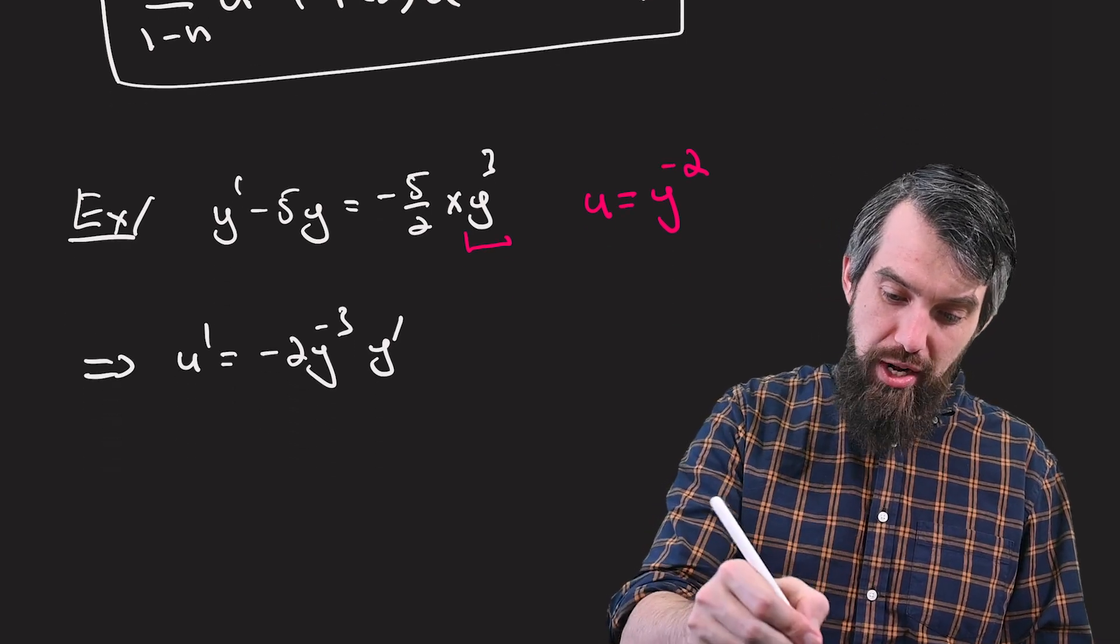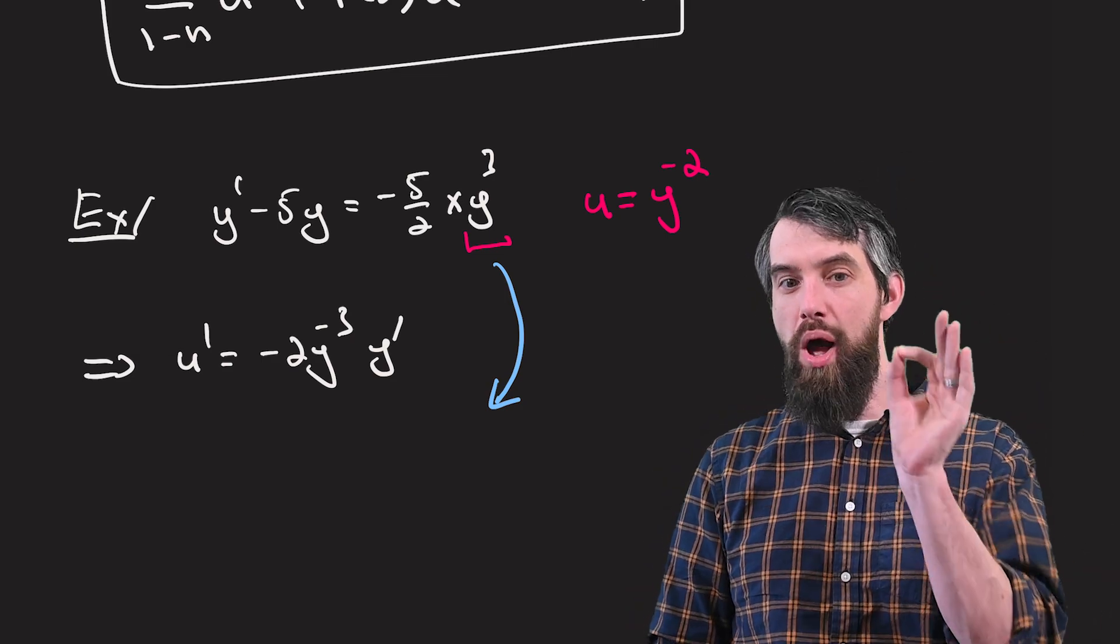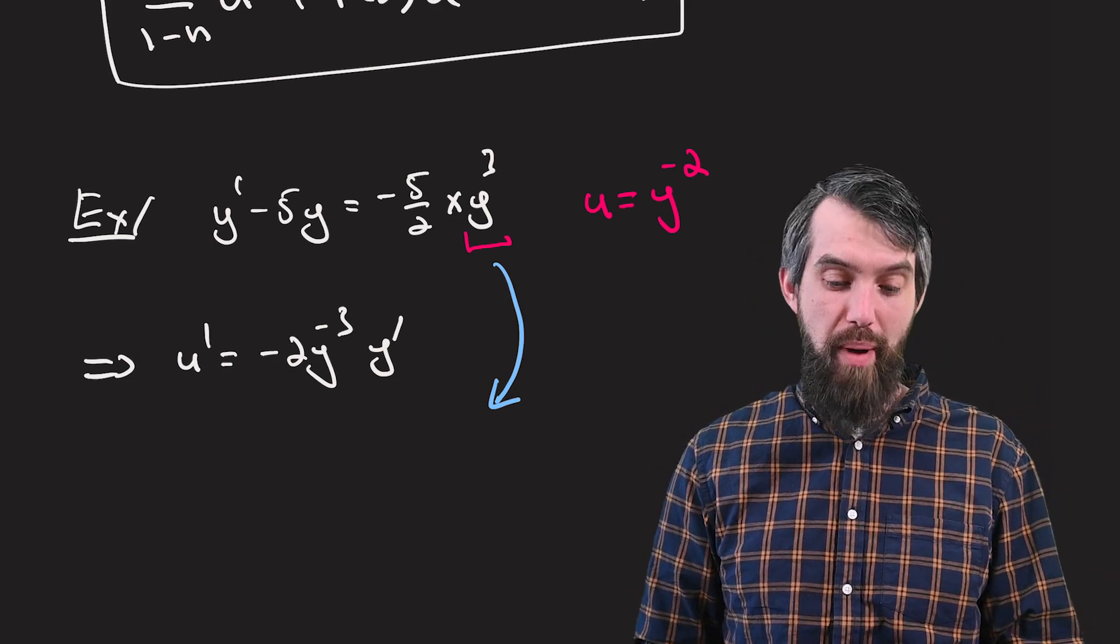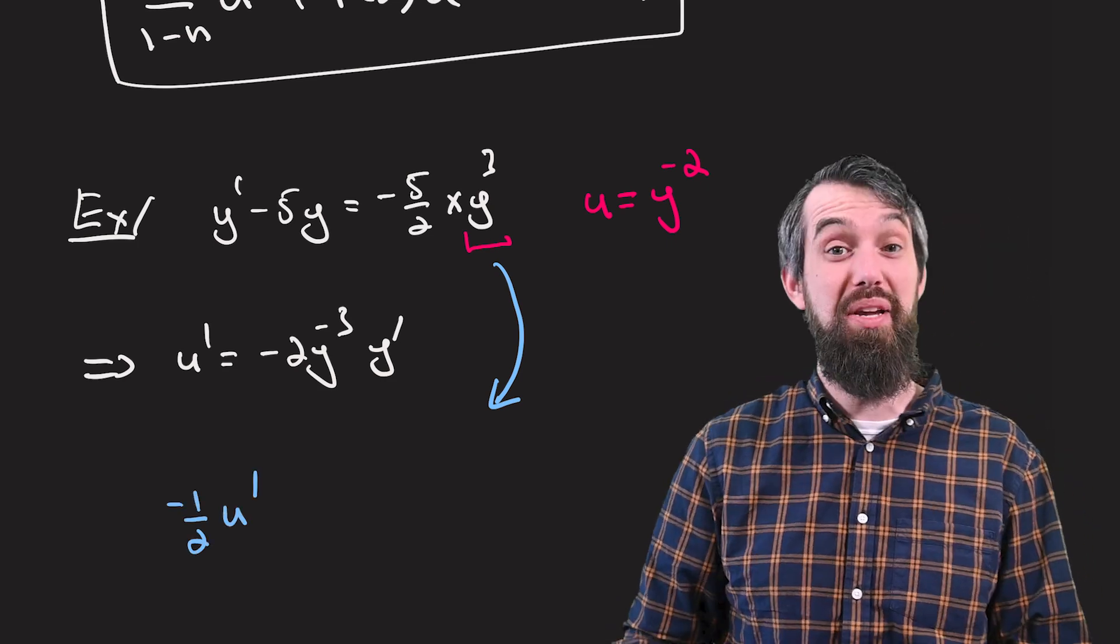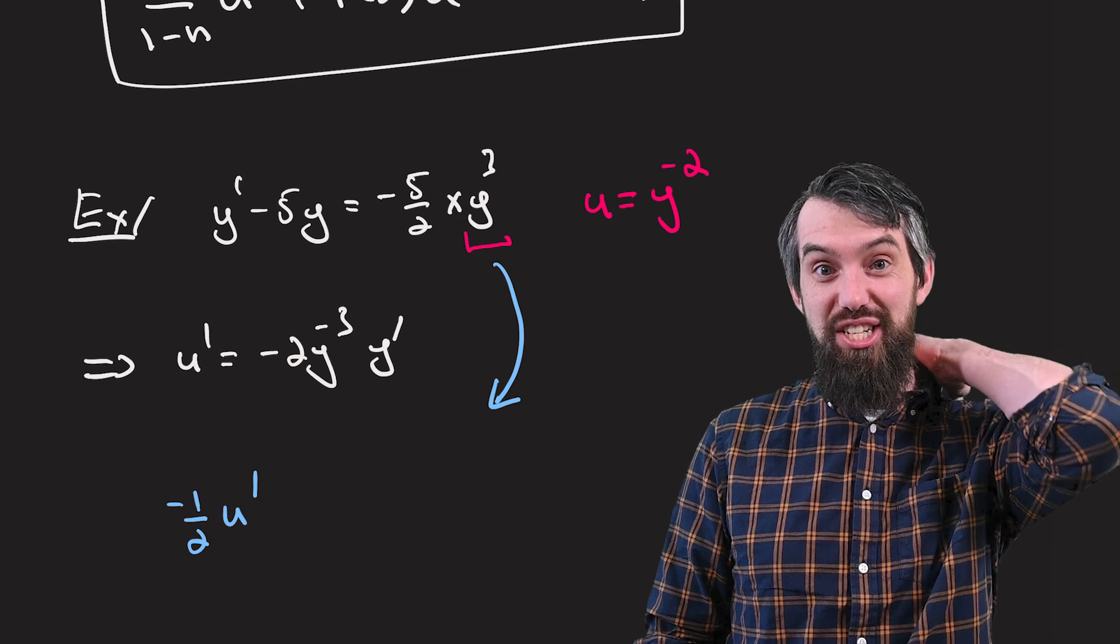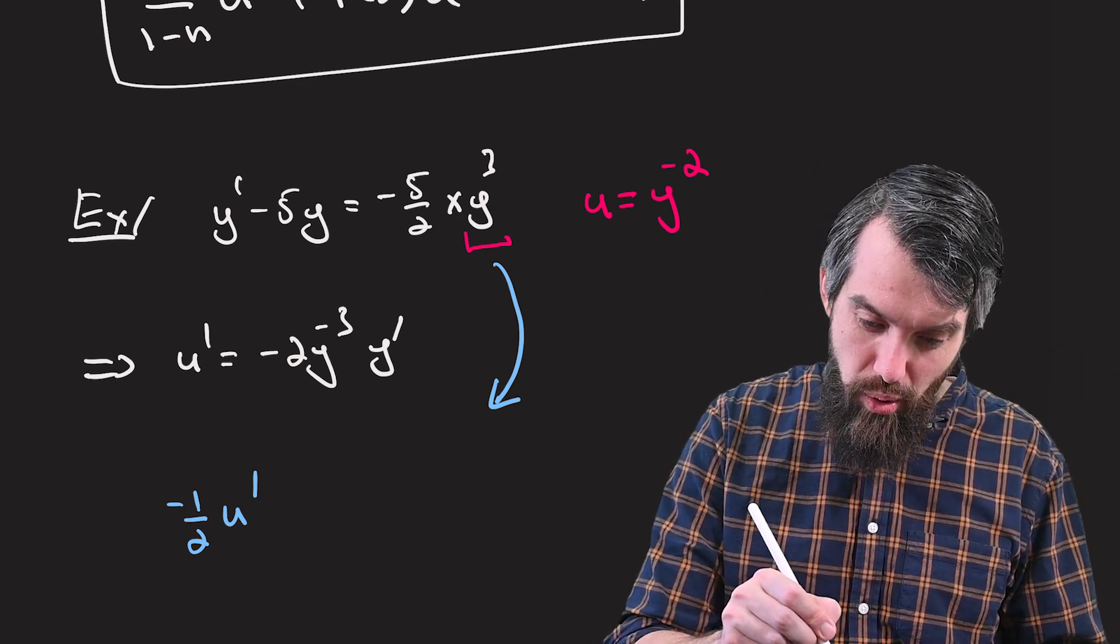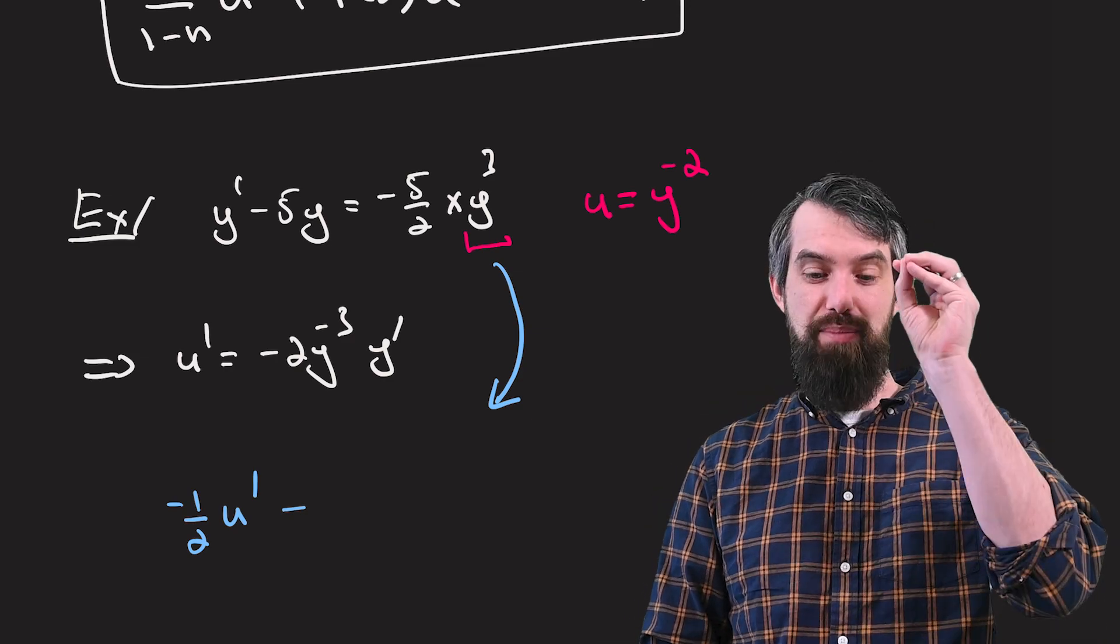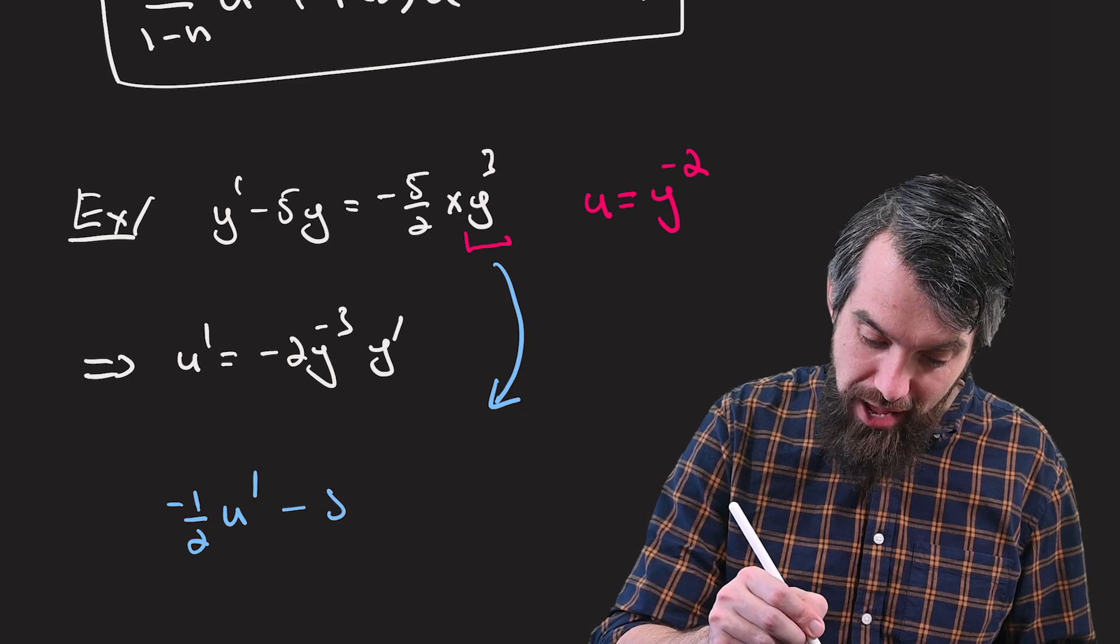I'm going to take the original equation, and I'm going to now rewrite it, dividing out by y cubed in my head. So when I divide out by my y cubed in my head, I notice that, first of all, I'm going to have a negative 1 half times the u prime. That's because there was a minus 2. And I'm changing it over to the other side, so minus 1 half. And then I'm going to have a minus 5 times y divided by y cubed is y to the minus 2. So there's minus 5 times u.